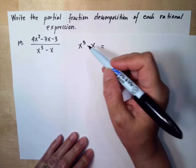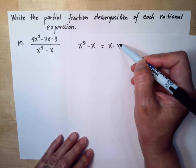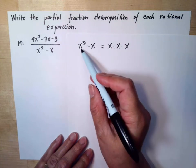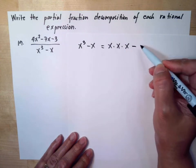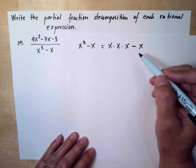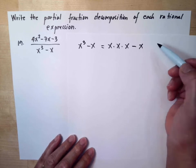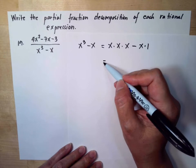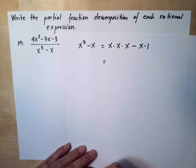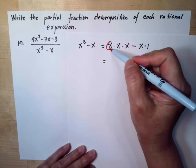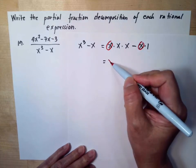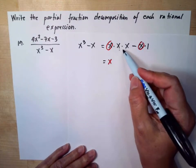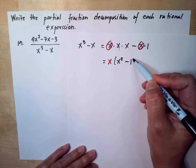x to the third means x multiplied by x multiplied by x. So x to the third minus x — the factors of x are x multiplied by 1, so we can write x multiplied by 1 here. The common factor is x, so we take that out. The remaining terms x times x give x squared, then minus 1.